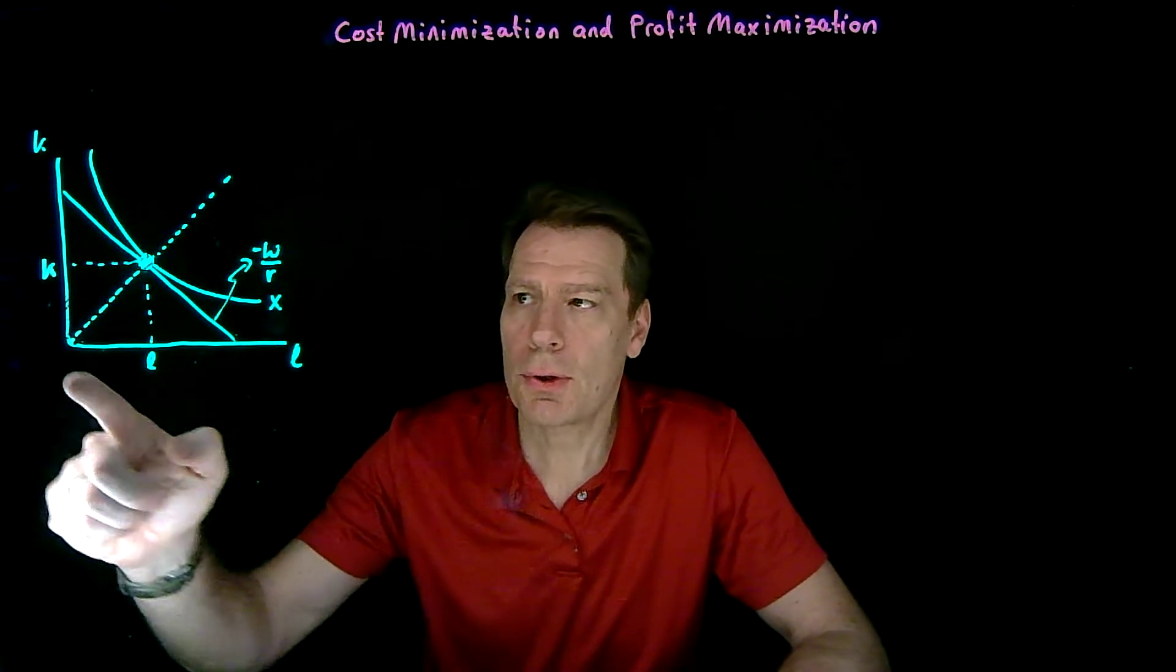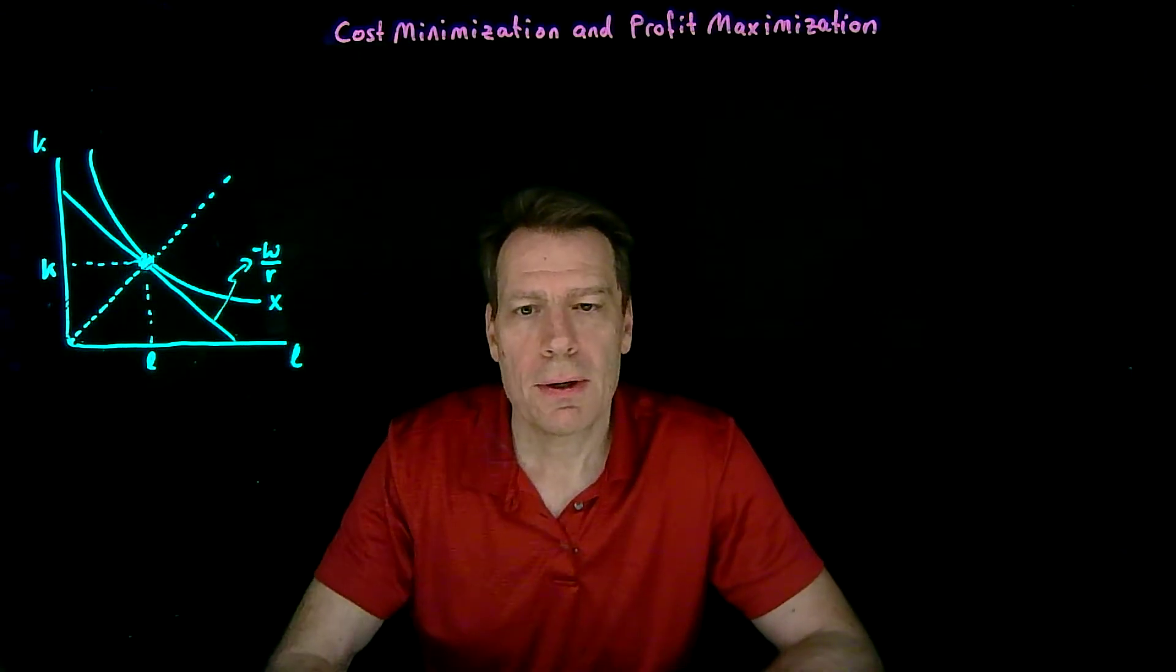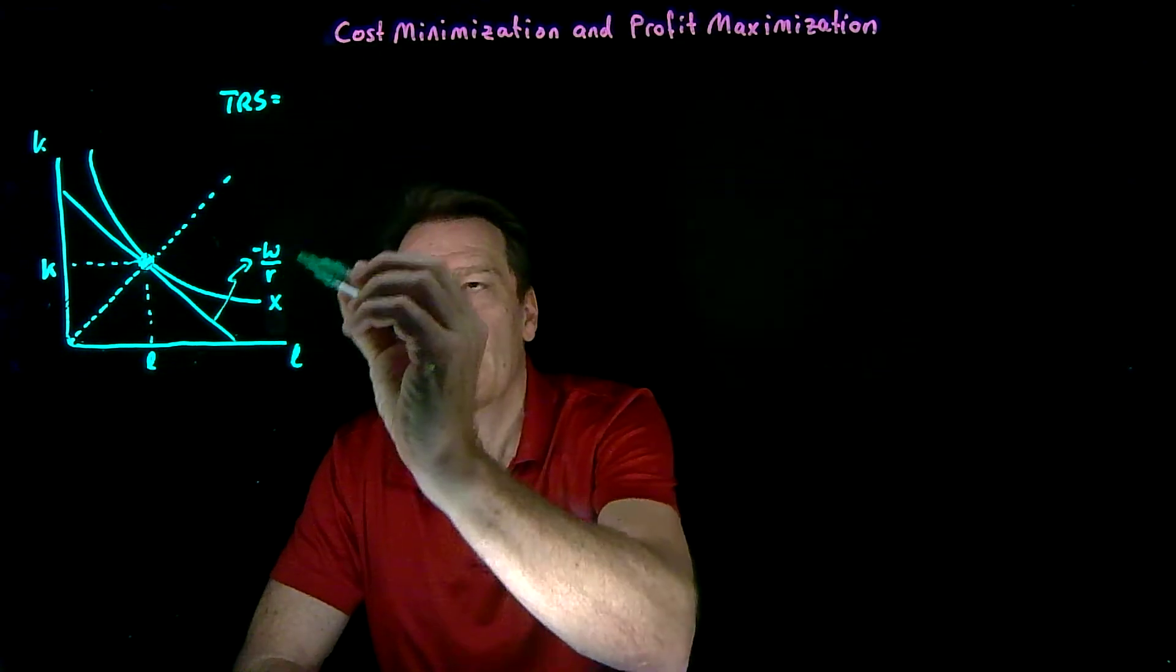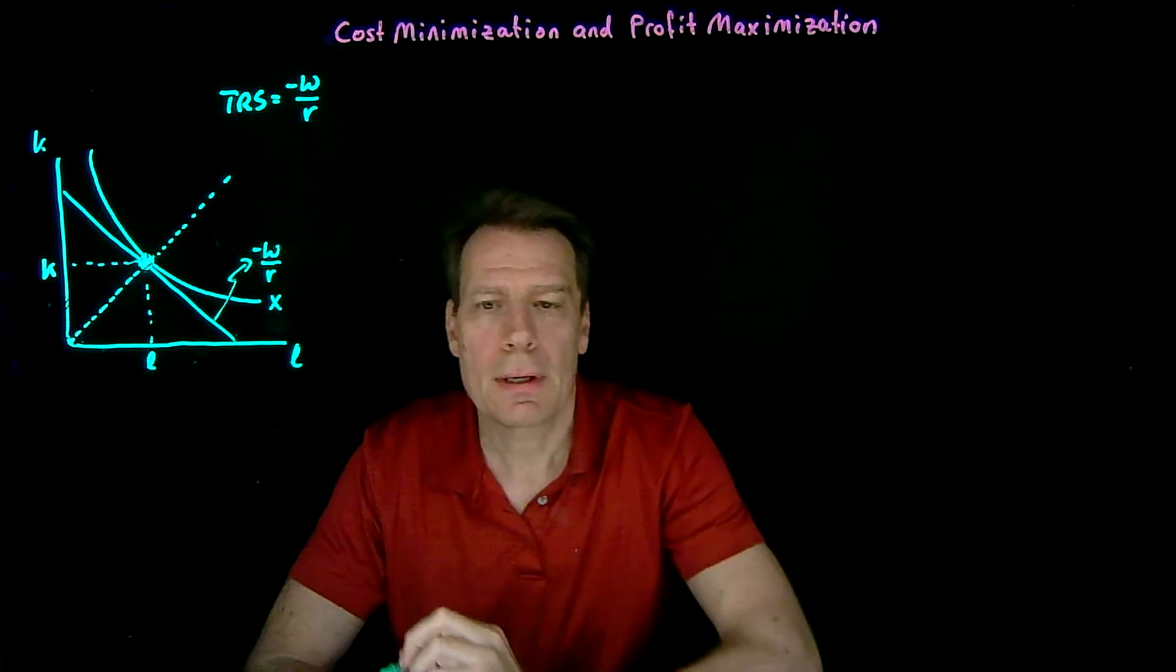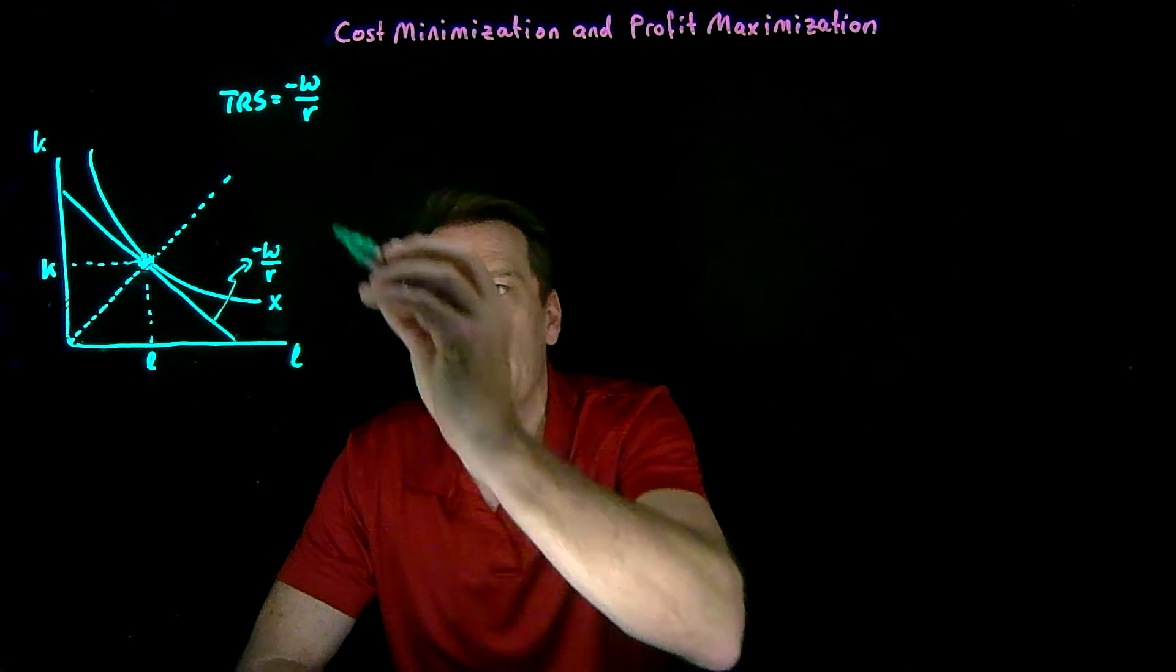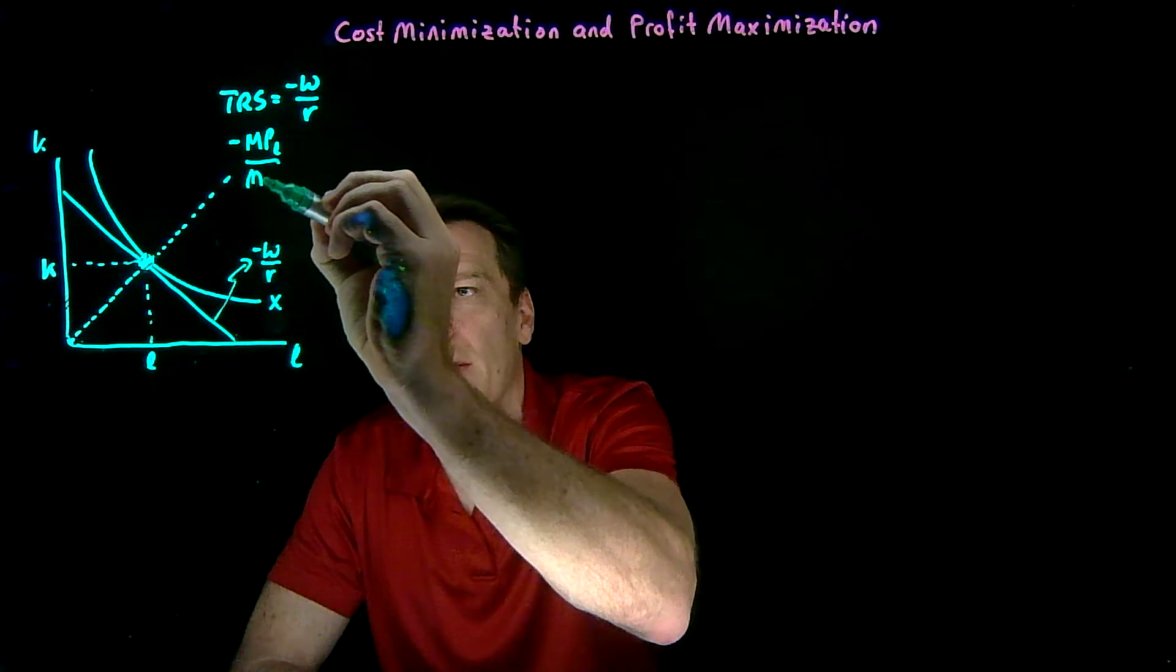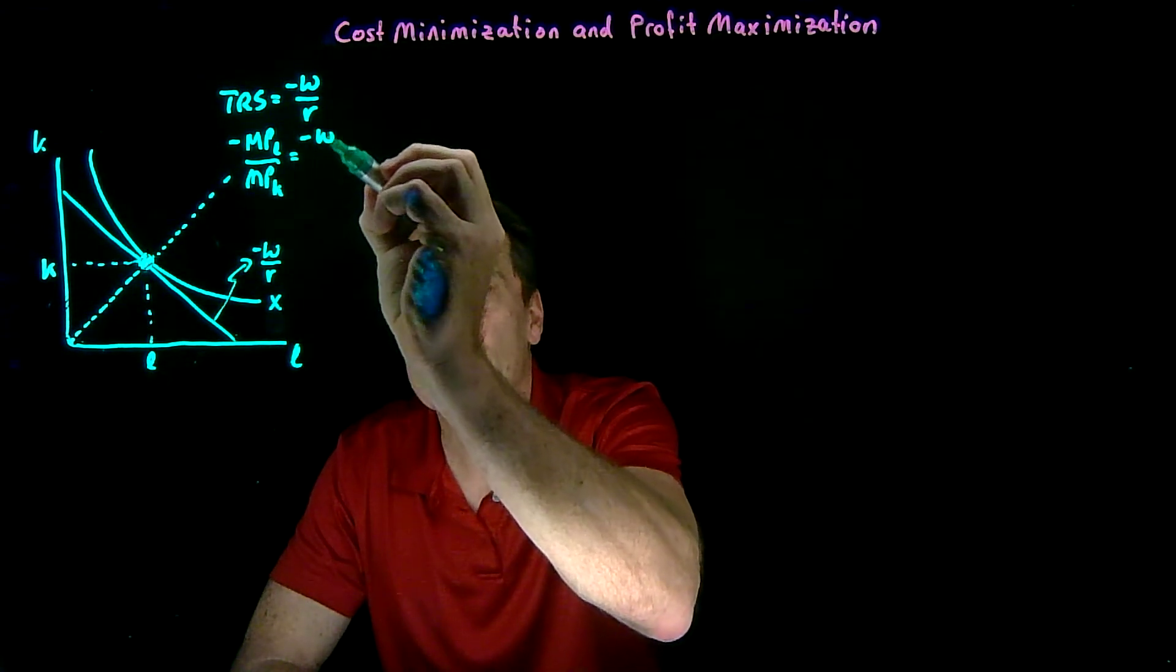Since there are tangencies all along that ray of isoquants and isocost budgets, we know that all along that ray, the technical rate of substitution, the slope of the isoquant, is equal to the slope of the budgets, minus W over R. And we also know that we can write the technical rate of substitution as a ratio of marginal products. It's just equal to minus the marginal product of labor divided by the marginal product of capital. So that's equal to minus W over R.